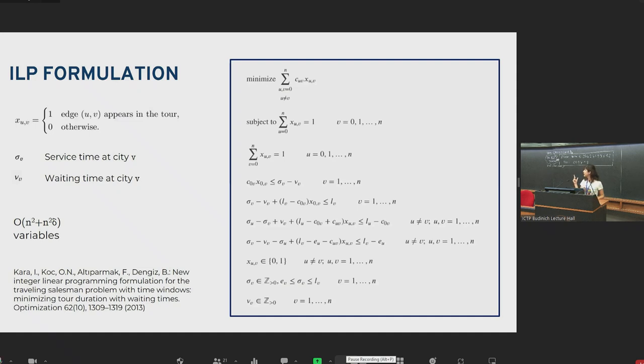Very briefly to mention, for the last formulation I showed you in the previous slide, there exists an integer linear program, which has a linear objective with linear inequalities. What we did was we realized that some of the inequalities were redundant and we removed them. We also made some simplification for the variables. Then we also used the penalty method to obtain the QUBO formulation. This resulted in a QUBO formulation with N squared plus N delta variables.